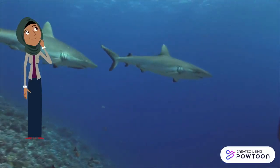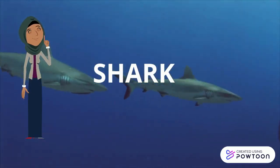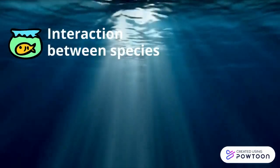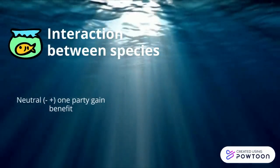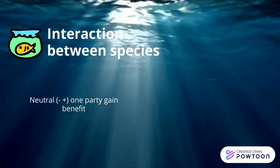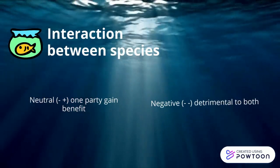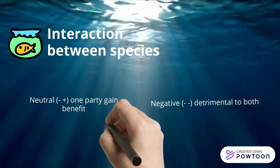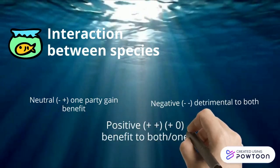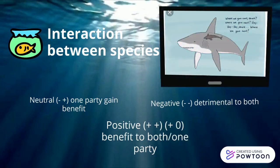For more detail, I will talk about shark as the example. There are three interactions between species. First is neutral, with one party gaining benefit. Second is negative, where it is detrimental to both. Third is positive, where it is beneficial to both. So, this is the interaction between shark and remora as a positive interaction.